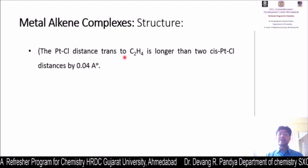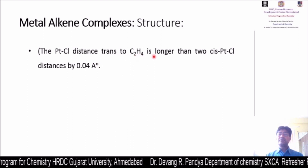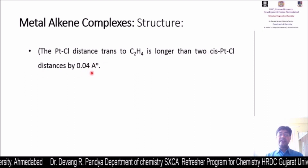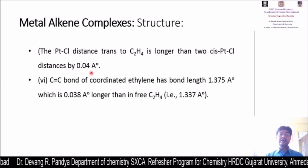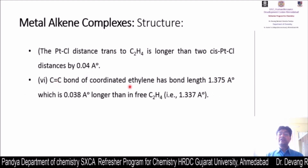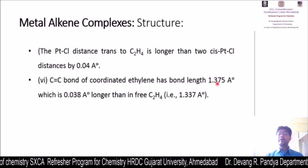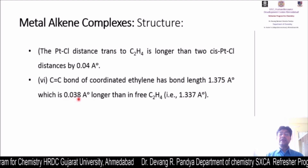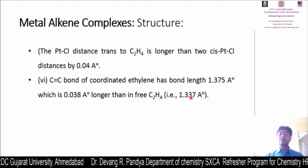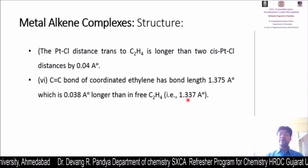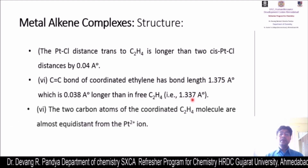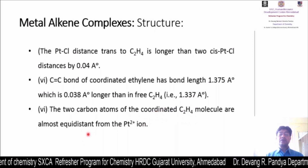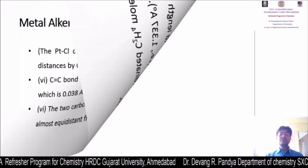The main structural features of the anion of Zeise's salt are: Pt²⁺ is at the center of a square planar geometry; three corners are occupied by chloride ions; C2H4 occupies the fourth coordination site with the carbon-carbon bond perpendicular to the platinum-trichloride plane. The Pt-Cl distance trans to ethylene is longer than the cis distance by 0.04 Å. The carbon-carbon double bond of coordinated ethylene is lengthened to 1.375 Å, which is 0.038 Å longer than in free ethylene (1.337 Å). The two carbon atoms of coordinated C2H4 are almost equidistant from Pt²⁺.